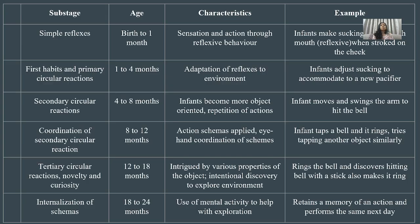Regarding age spans: sensorimotor is 0–2 years, pre-operational is 2–7 years, concrete operational is 7–11 years, and formal operational is 12–19 years. The sensorimotor stage has 6 sub-stages: simple reflexes (0–1 month); first habits and primary circular reactions (1–4 months); secondary circular reactions (4–8 months); coordination of secondary circular reactions (8–12 months); tertiary circular reactions and novelty/curiosity (12–18 months); and internalization of schemas (18–24 months).